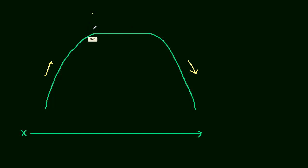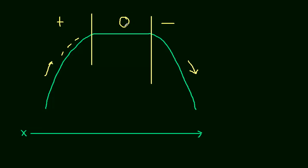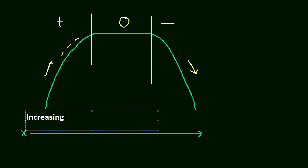In terms of the derivative, this should look familiar. If the function is increasing, the derivative is positive — positive slope. If the function is decreasing, then the derivative is negative. And if it's constant, then the derivative is zero. We're just labeling what we've been saying all along. So: increasing, constant, and decreasing.